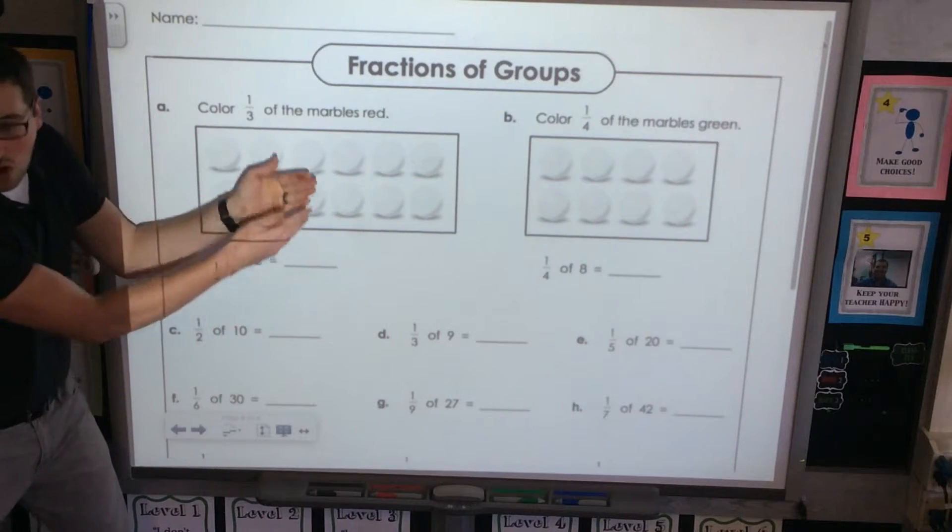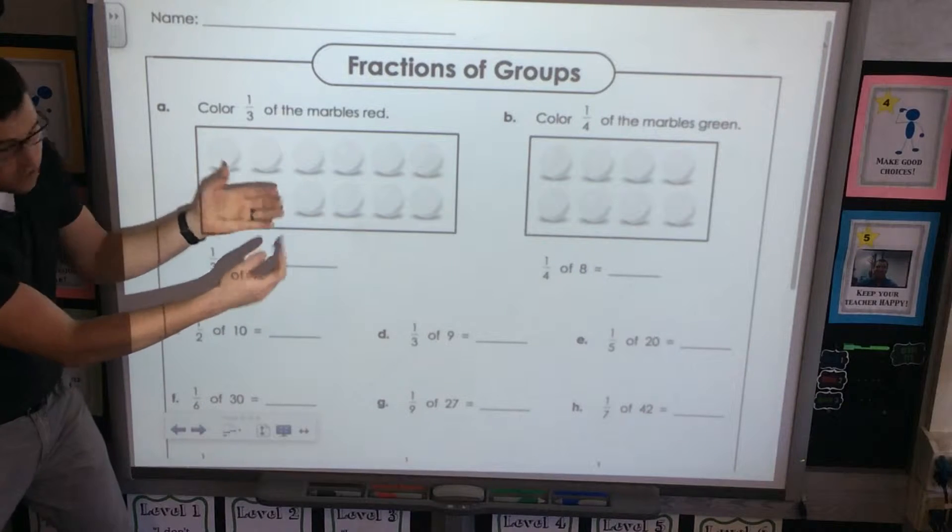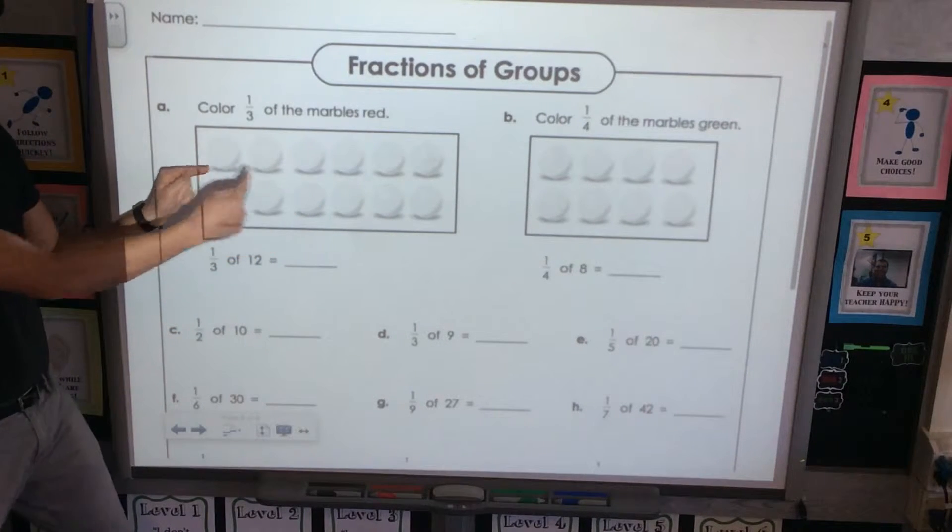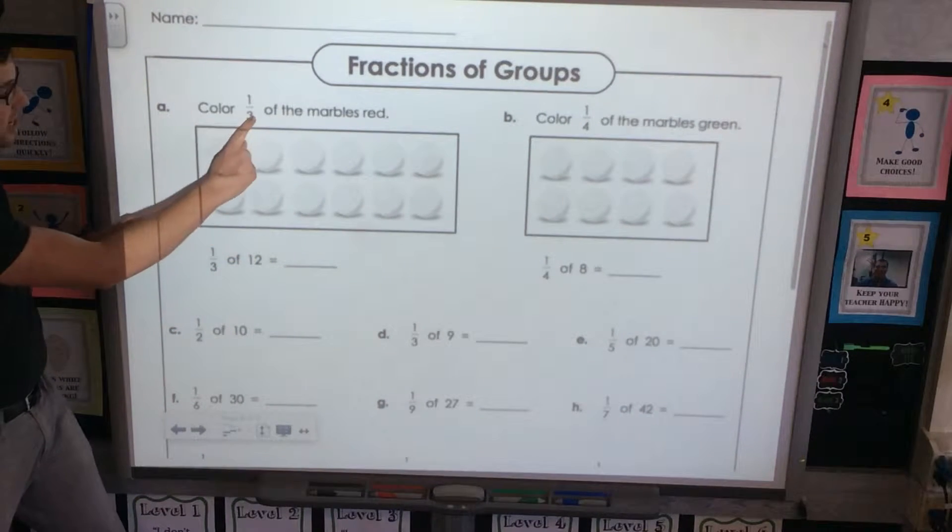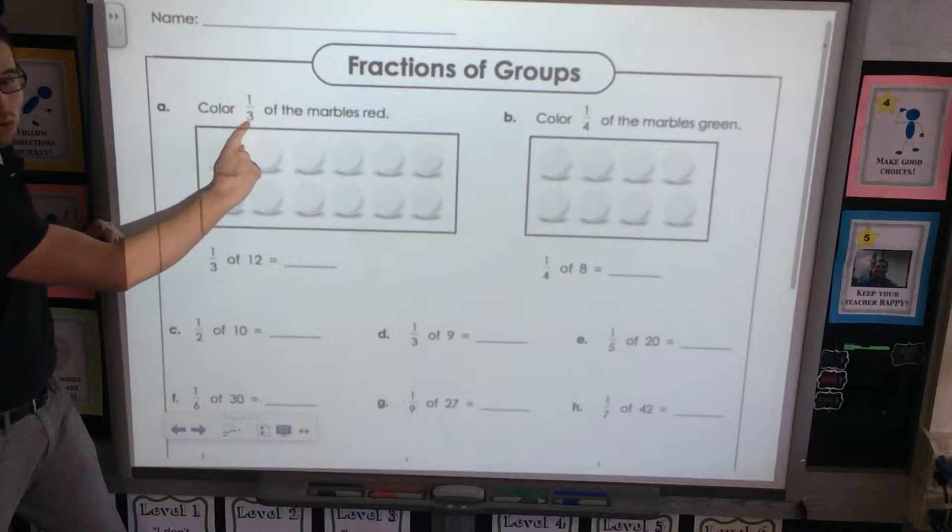Basically, it's when you have a total, when we have a what? A total! And we're splitting the total up into equal groups.